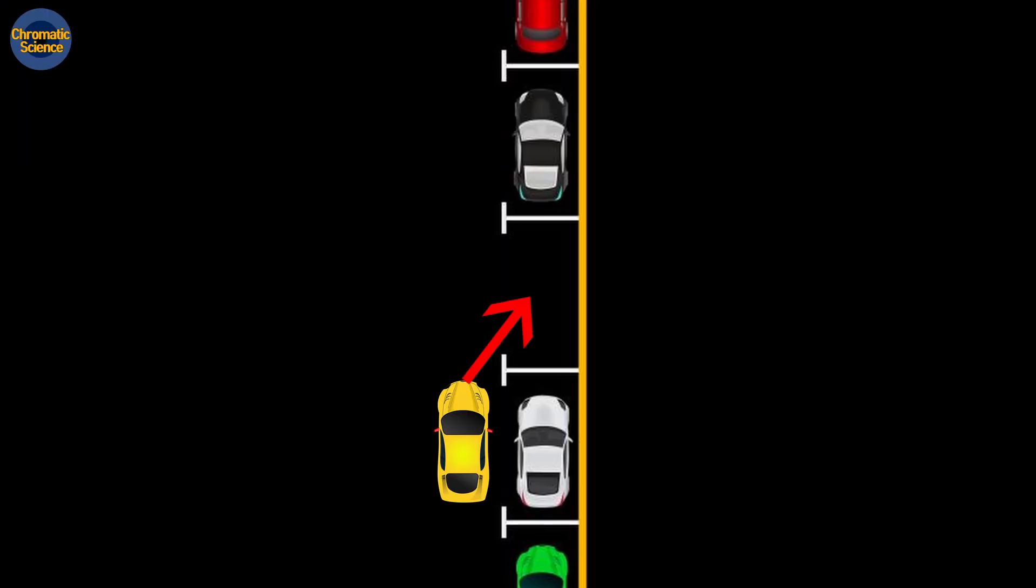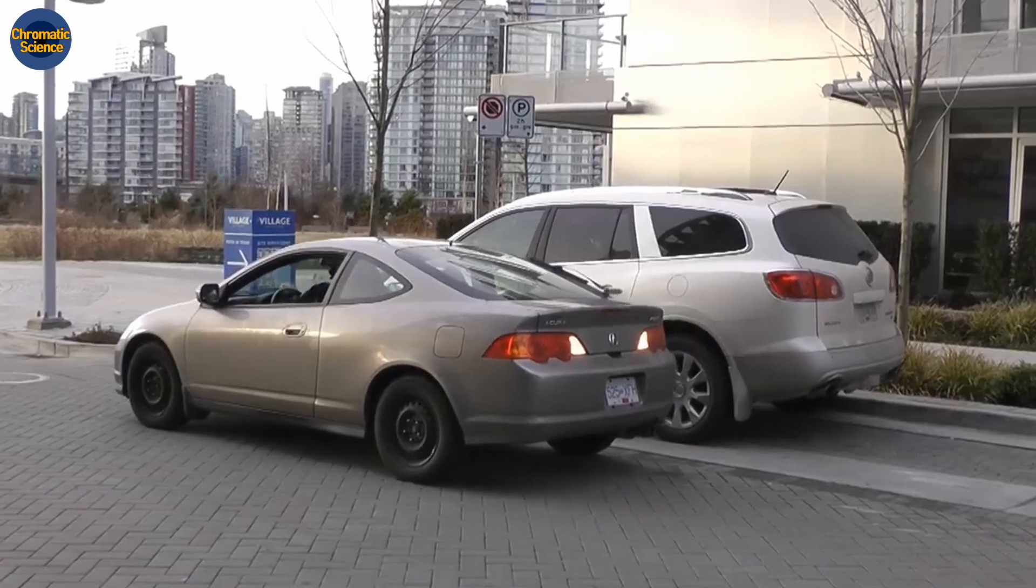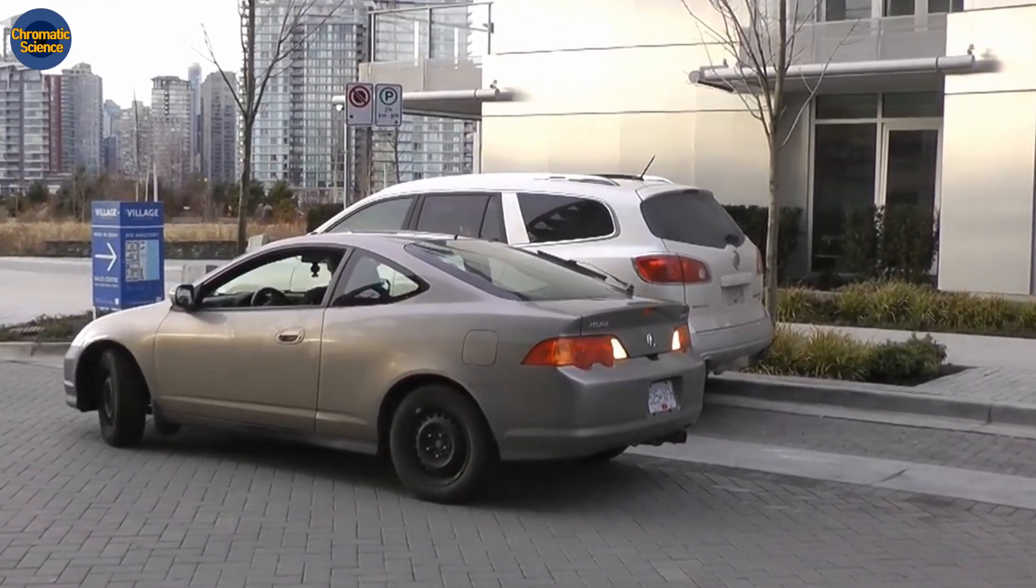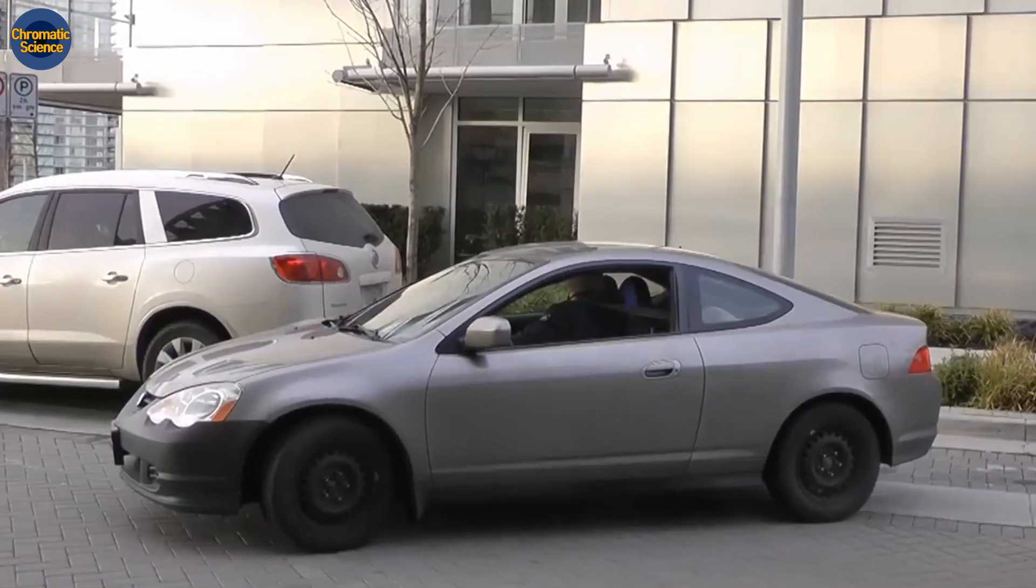In parallel parking, we aim to move a car to a specific location and rotate it to a certain orientation. Not like this, but like this. So, we need to give a right order of forward and backward movement and left and right steering. To learn this perfect order, we should make some effort.